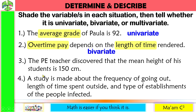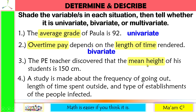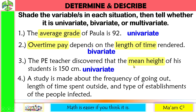Number three: the PE teacher discovered that the mean height of his students is 150 centimeters. What could vary here? The mean height. We only have one variable, so this is univariate. Quick tip: measures of central tendency — such as mean, median, or mode — are used to describe univariate data.